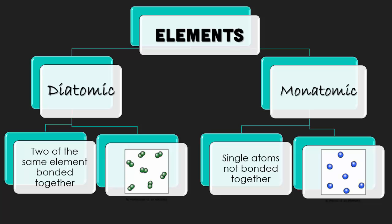Elements can be broken down into two categories: diatomic and monatomic. Diatomic means there are two of the same element bonded together. Oxygen gas, for instance, is always listed as O2 because two oxygen atoms are always combined together. Monatomic atoms, however, are single atoms not bonded together — sodium, for instance, is one of our monatomic atoms. Most elements on the periodic table are monatomic; there are only seven diatomics.